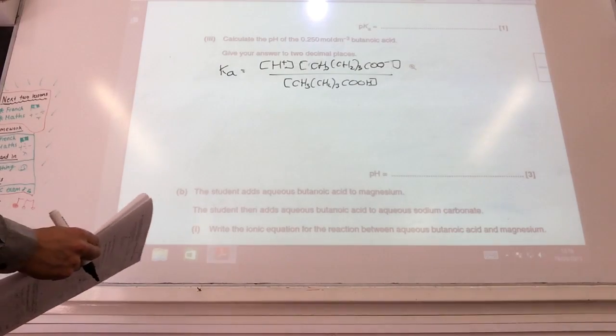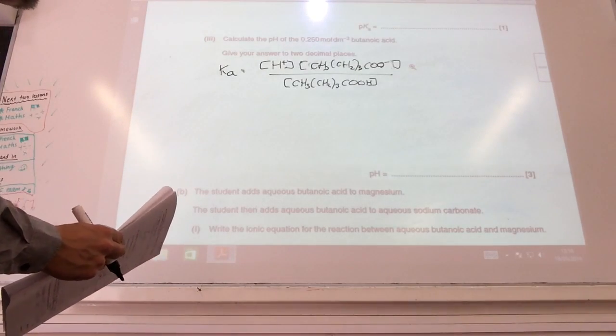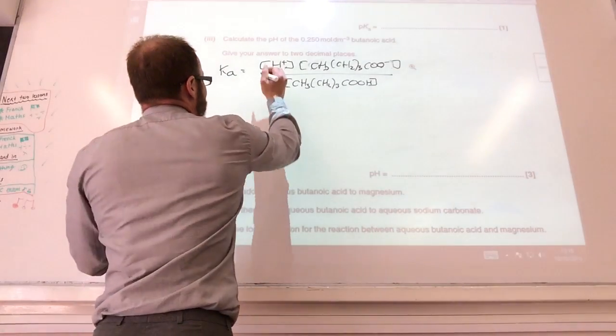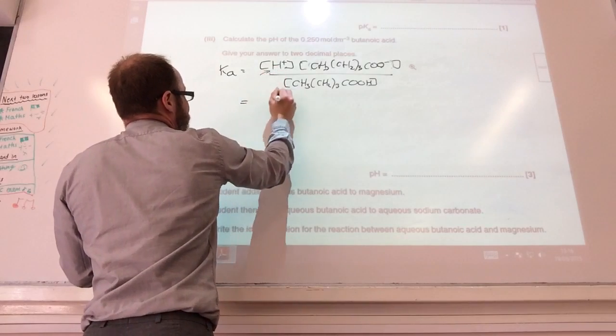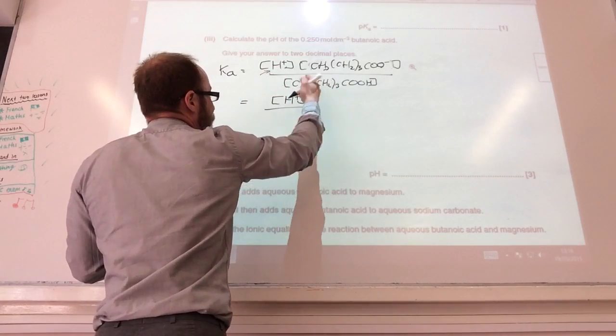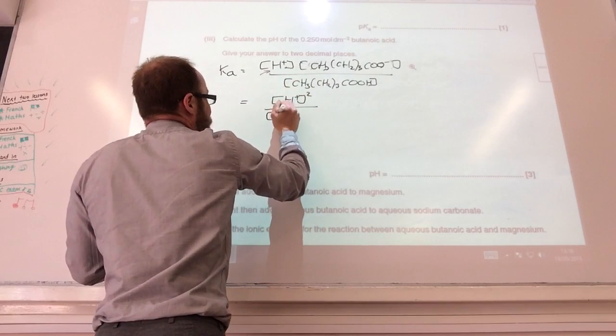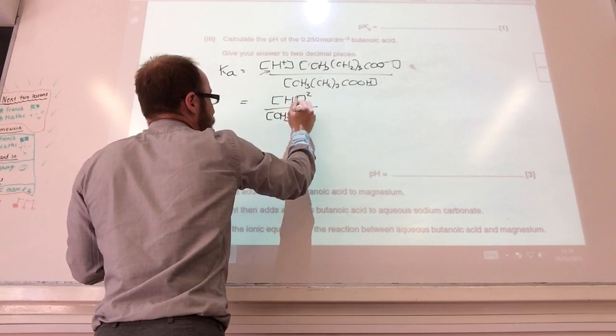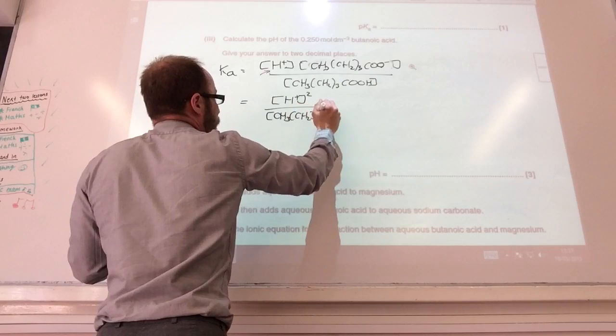Okay, so it's now asking me to calculate the pH. To calculate the pH of butanoic acid, I obviously need to find that H+ concentration. Remember, we can simplify this. We assume that that is equal to that. So it's just the concentration of H+ squared,